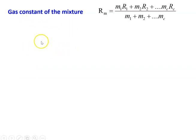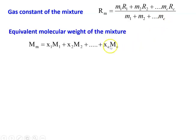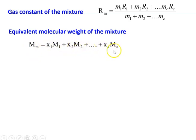The gas constant of the gaseous mixture is: Rm = (M1·R1 + M2·R2 + ... + Mc·Rc) / (M1 + M2 + ... + Mc), where the denominator M is the total mass of the gaseous mixture. The equivalent molecular weight of the gaseous mixture is: M = X1·M1 + X2·M2 + ... + Xc·Mc, where X1, X2 are the mole fractions and M1, M2 are the molecular weights of individual gas components.